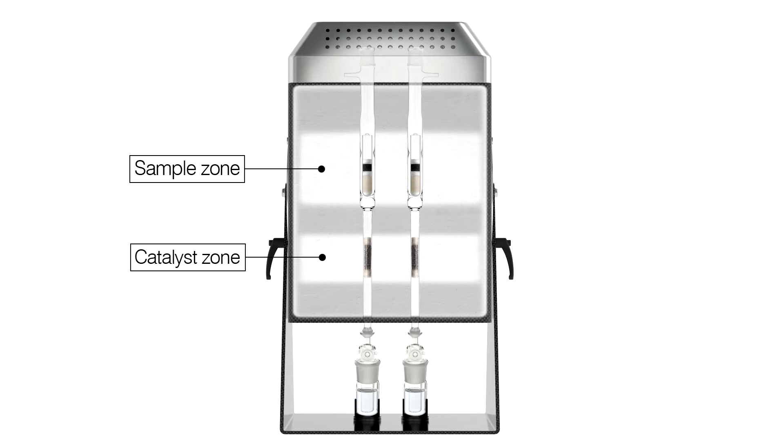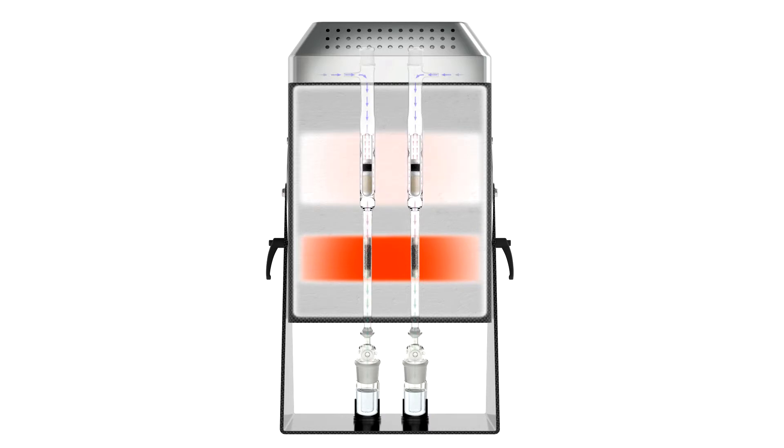Initially, the sample and catalyst zones are not powered. At the start of a combustion cycle, the catalyst zone is heated to 600 degrees centigrade. Unlike the larger pyrolyser trio systems, the mini does not incorporate a mid-zone to isolate the sample and catalyst zones. The sample zone therefore also begins to heat up, liberating tritiated water vapour and other volatile radionuclides.